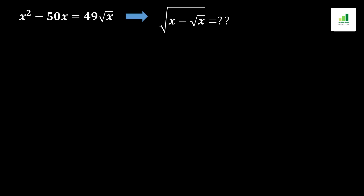Welcome to AMS. Today in this video we are going to solve a question. The equation is x² - 50x = 49√x, and we should solve for the expression x√x - √x, which is our targeted equation.